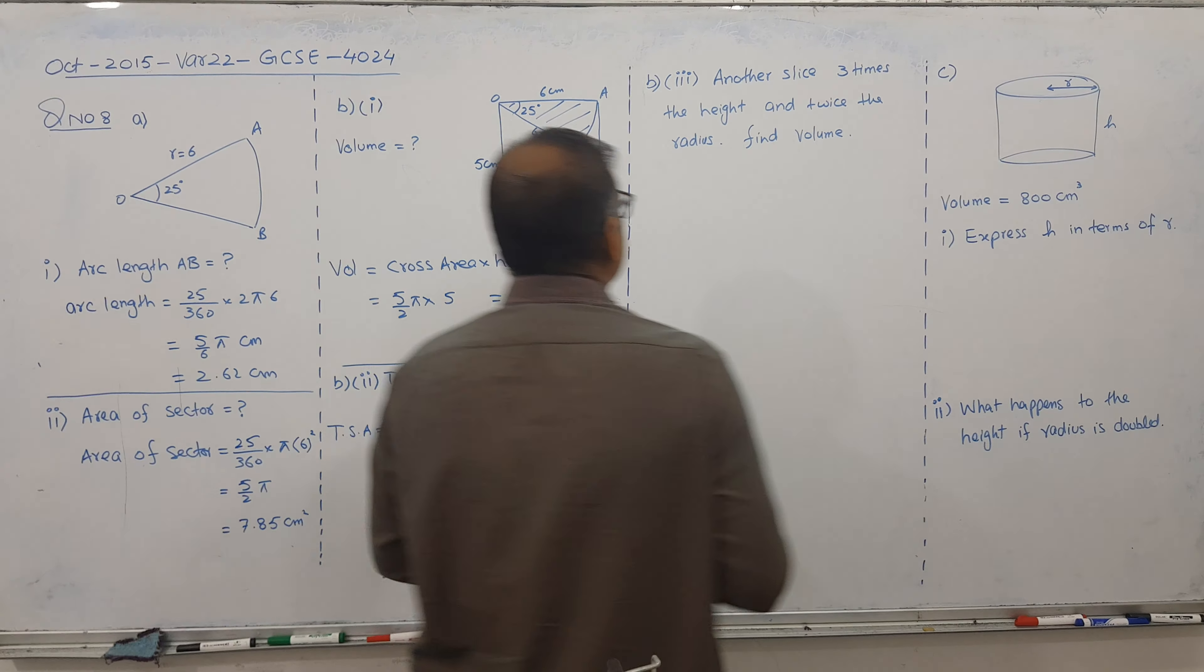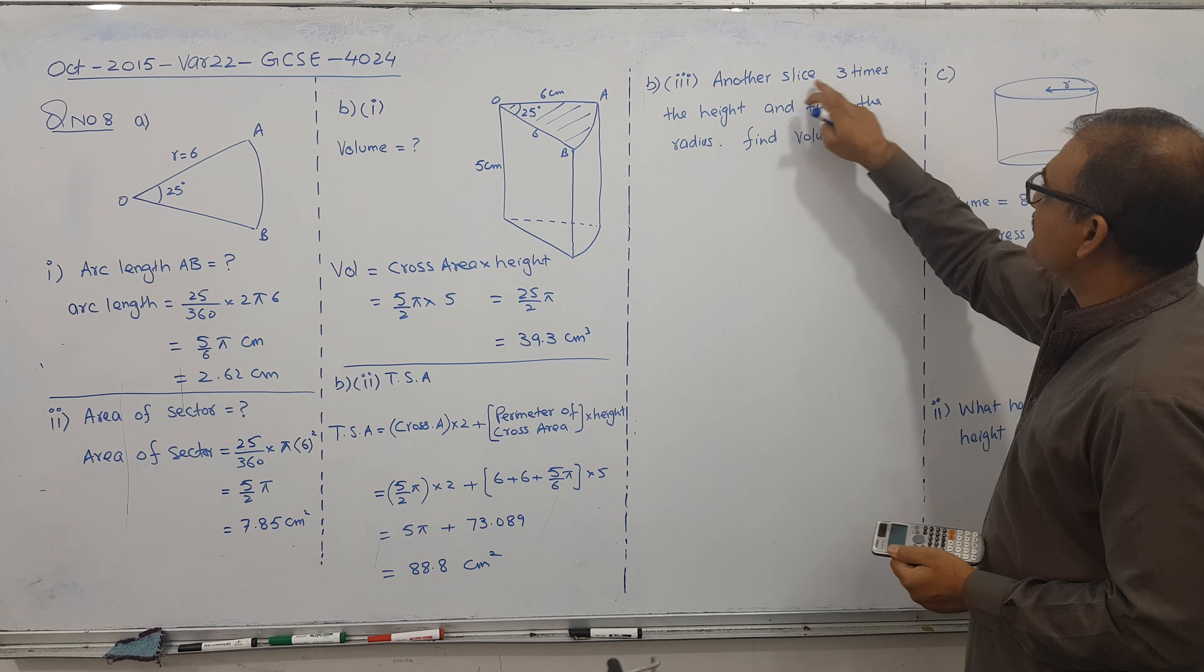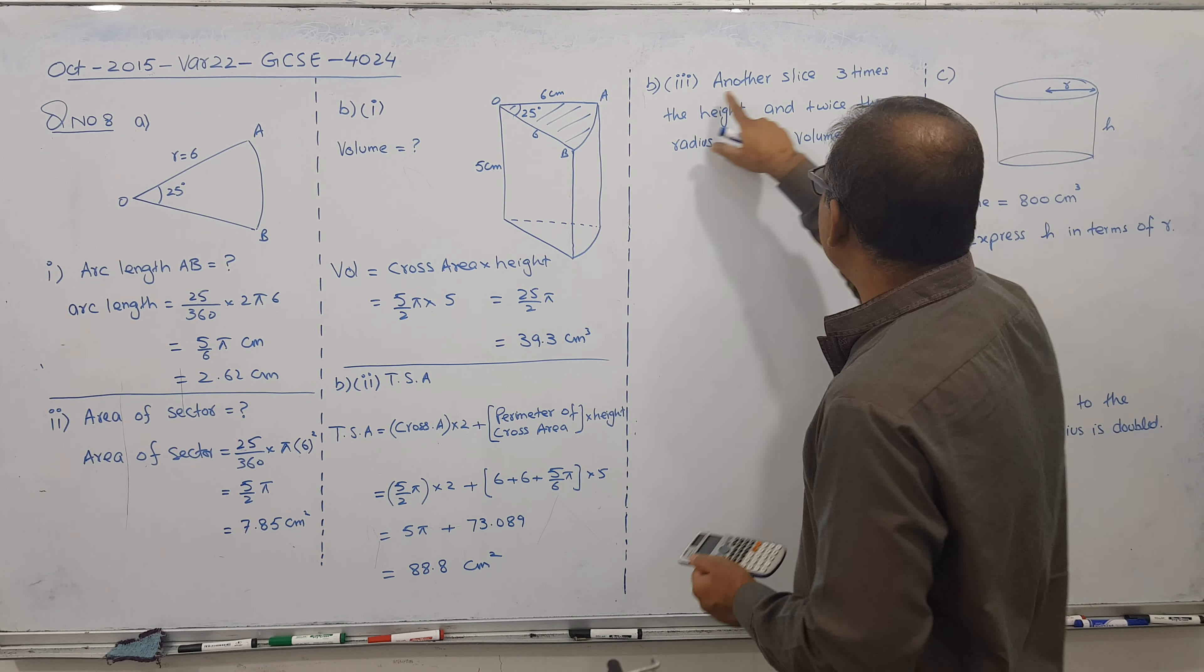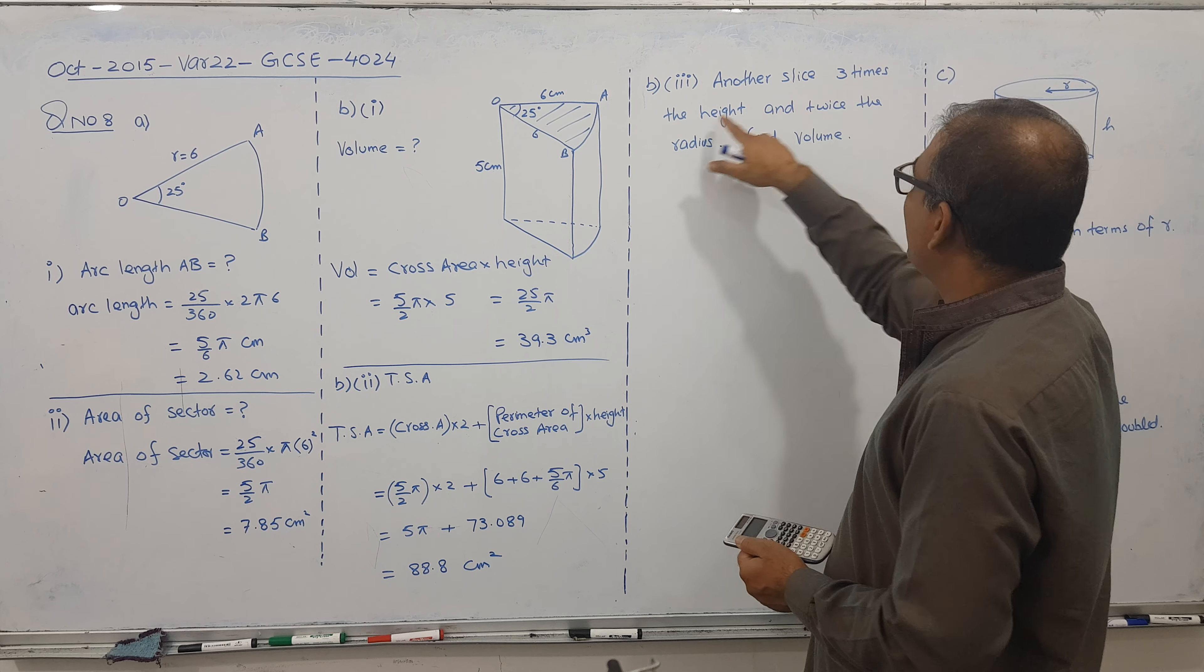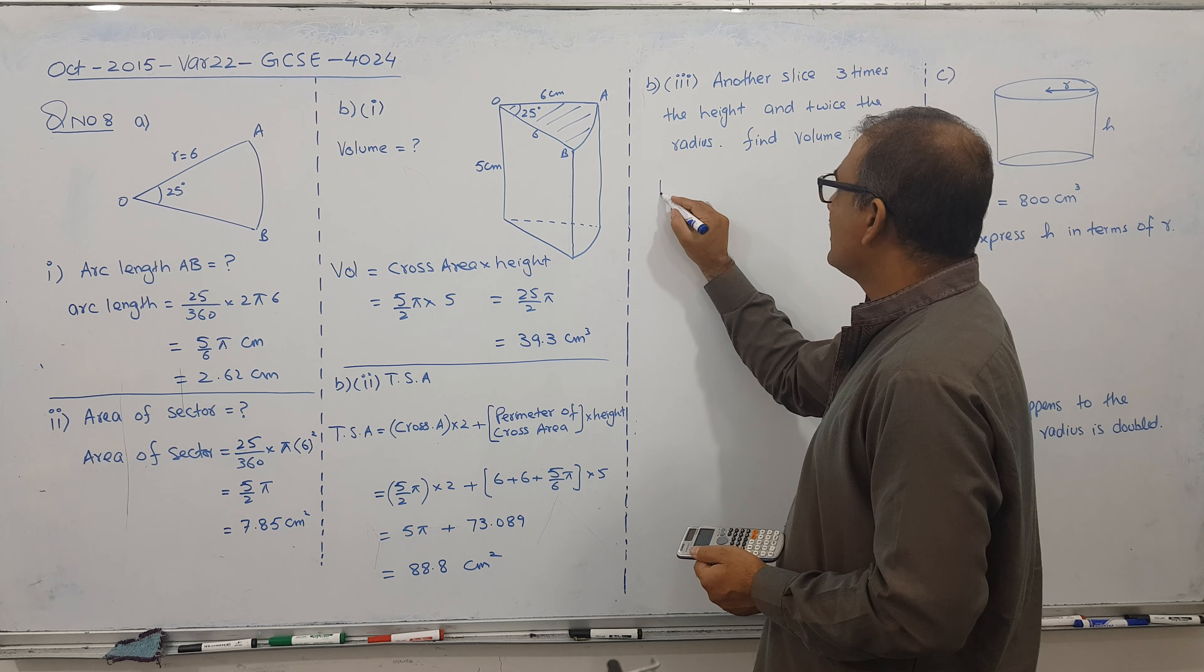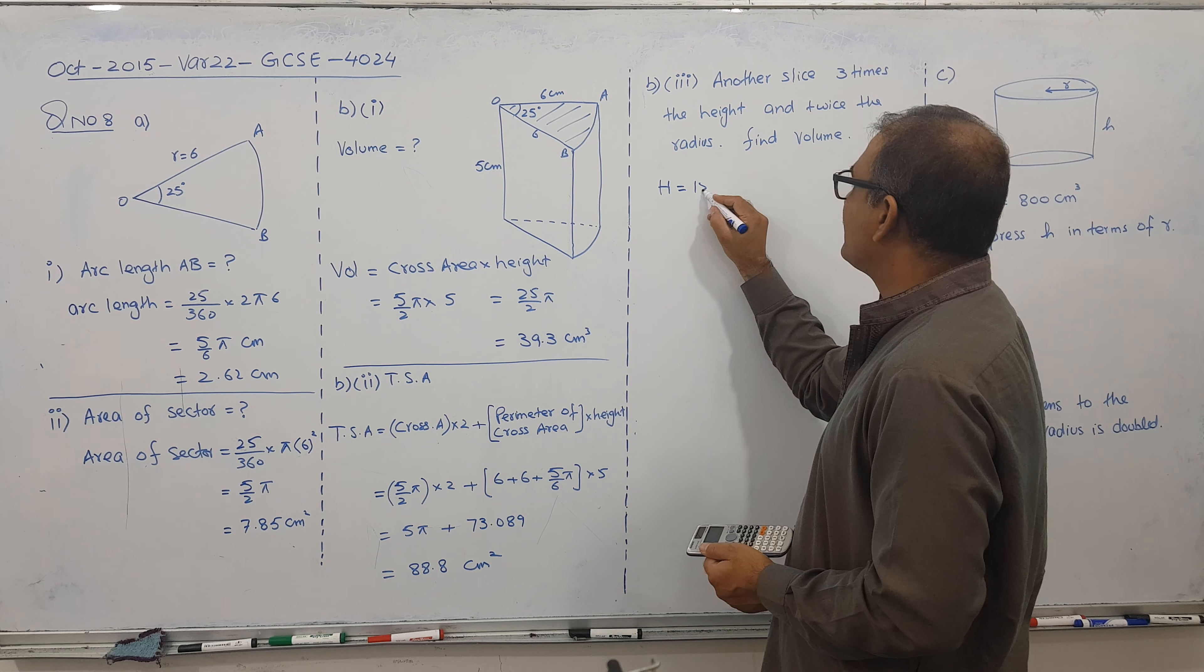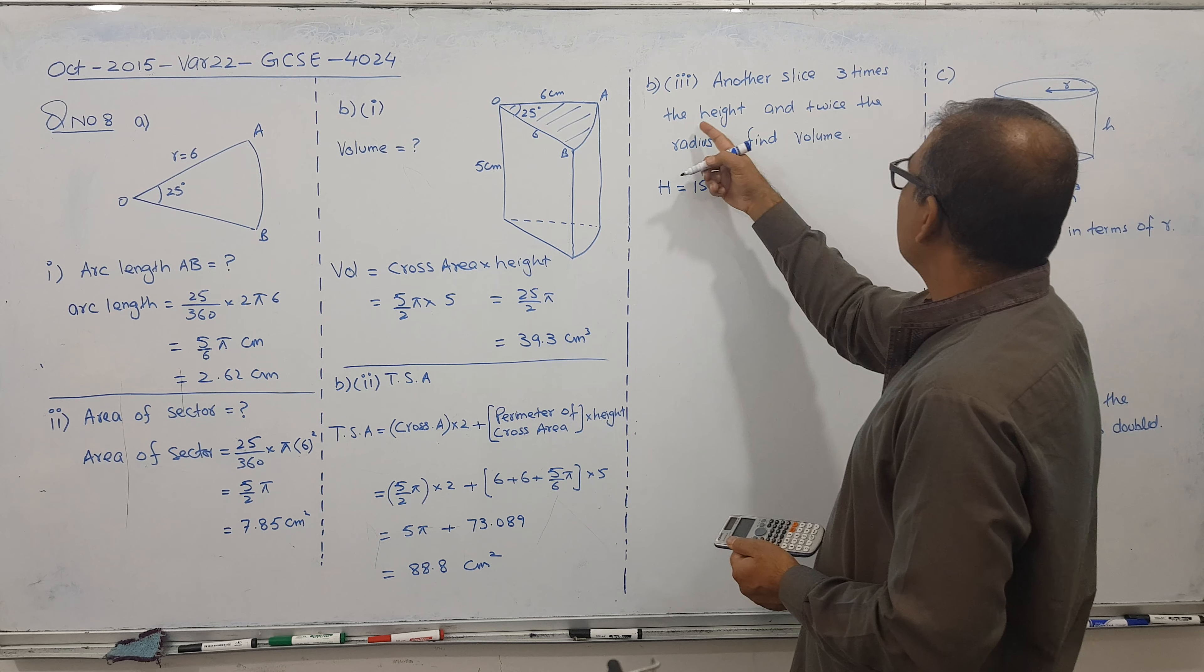And let's go for the next part. And this is the important part. Another slice 3 times height. This height is 5. He said no. The height is 3 times. So in the new height. I use a capital H. So 3 times.